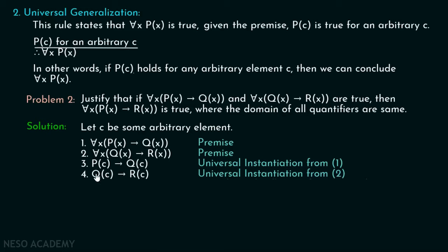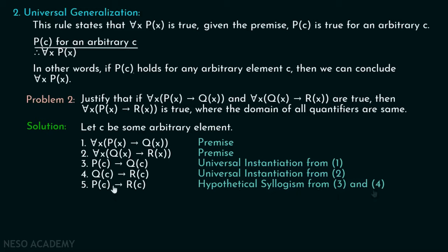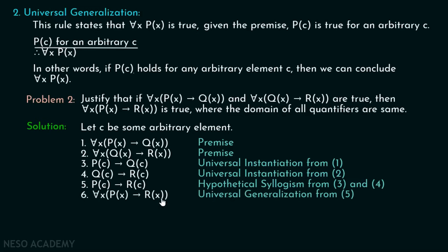Now, from steps three and four, we can write P(c) implies R(c). This is done by hypothetical syllogism — P(c) implies Q(c) is true and Q(c) implies R(c) is true, so P(c) implies R(c) follows. Now from step five, if P(c) implies R(c) is true for some arbitrary c, then for all x, P(x) implies R(x) has to be true. This is done by universal generalization. This is the use of universal generalization.